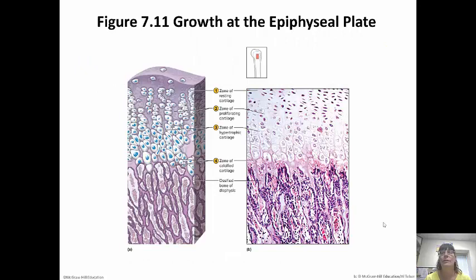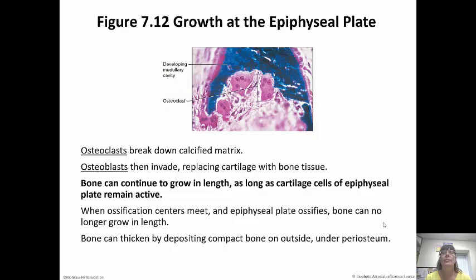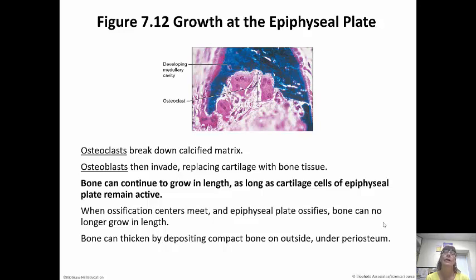Once the child stops growing, the epiphyseal plate hardens into an epiphyseal line and a doctor can see it on x-ray. Osteoclasts break down calcified matrix, then osteoblasts invade and replace the cartilage with bone. Bone can continue to grow in length as long as the cartilage cells of the epiphyseal plate remain active. The bone can also thicken by depositing compact bone on the outside under the periosteum.